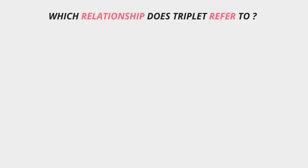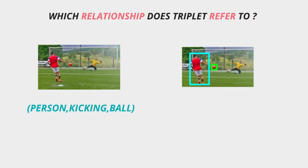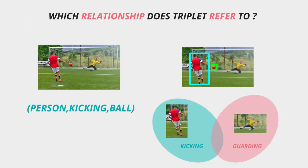So this means if the input to my model is a triplet called person, kicking, ball plus the image, then the output should be the localization or bounding box around the person who is kicking the ball and not the person who is protecting or goalkeeping. Similarly in the case of person guarding goal it should create the bounding box around the other person.